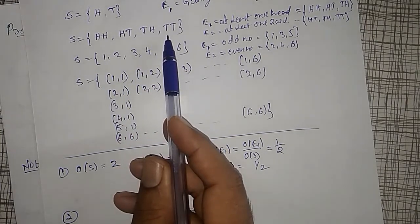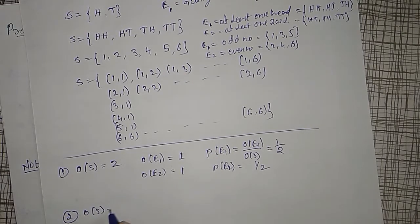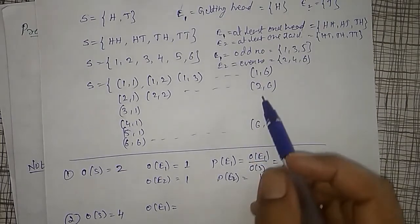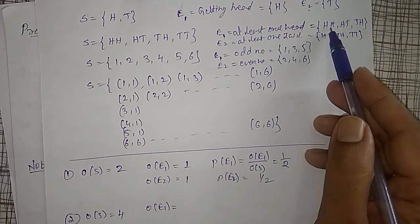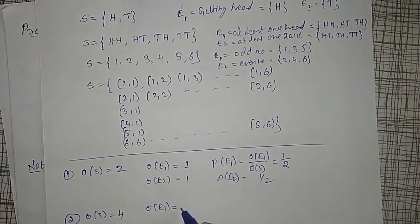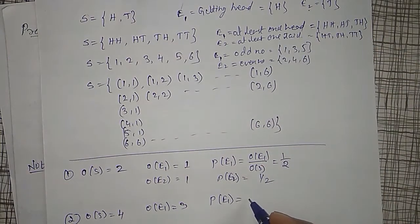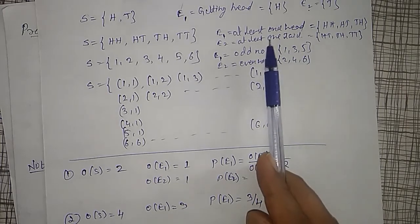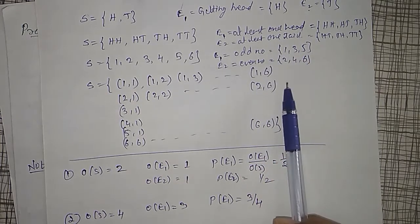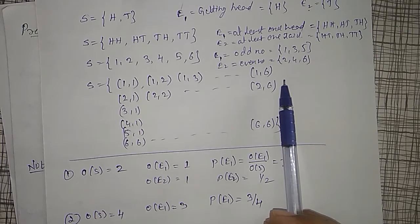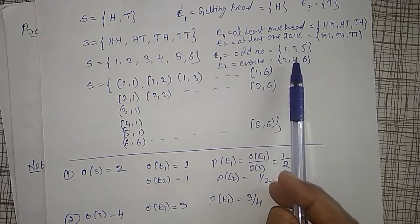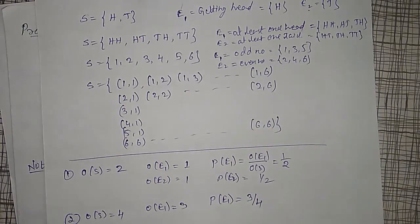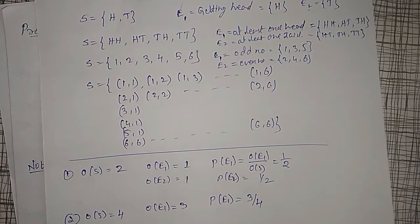Whenever two coins are tossed, the total possibilities are four, so order of S equals 4. The event — at least one head — has three possible outcomes, so its order is 3. Therefore, the probability of getting at least one head is 3 divided by 4. For a die, the probability of an odd number is 3 out of 6, which equals 1/2. This is how we define the probability of an event.